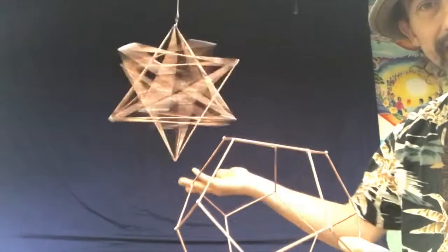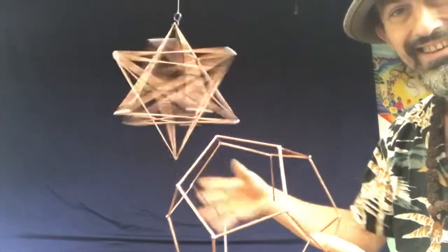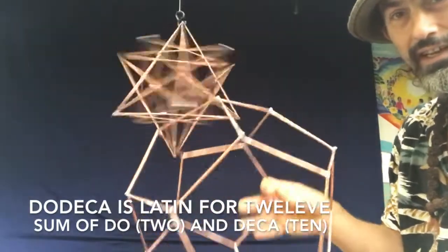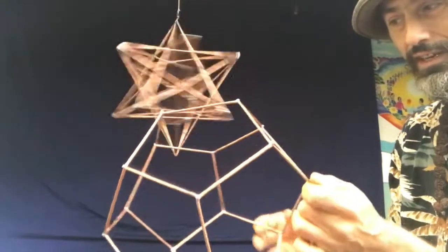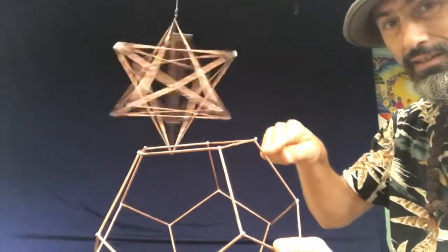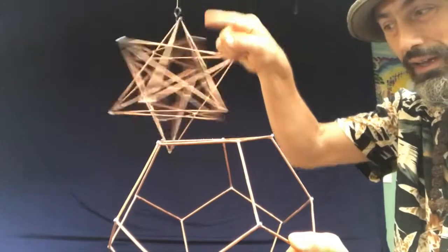Because within this stellated dodecahedron that's spinning is a dodecahedron. So if we took these lines from the dodecahedron and extended them to where they would meet up at the top,